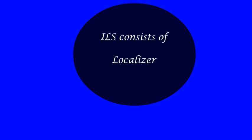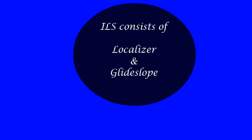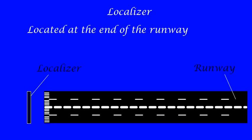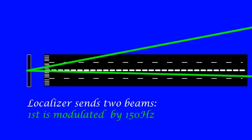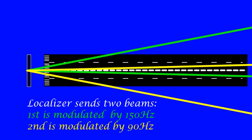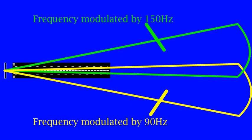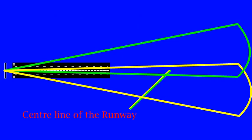ILS consists of a localizer and a glide slope. Localizer is located at the end of the runway which guides the aircraft towards the centerline of the runway. It sends two beams. First modulated by 150Hz and the other modulated by 90Hz. Where the overlap represents the centerline of the runway.